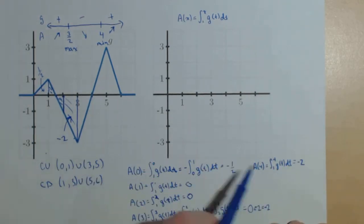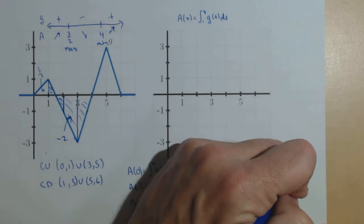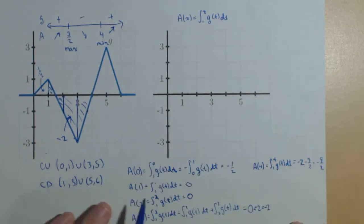So, we know it's a negative 2 plus what we're accumulating from 3 to 4, which is going to be a negative 3 halves. So, minus 3 halves gives us a negative 9 halves.